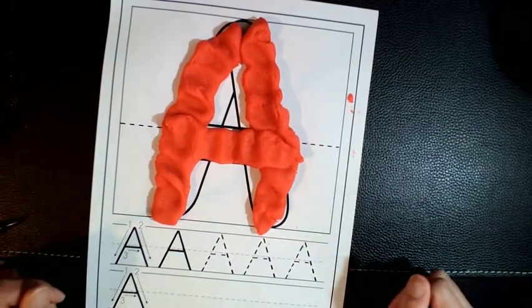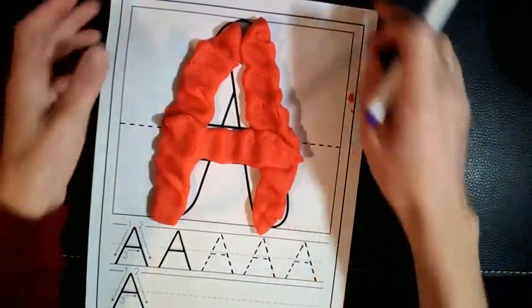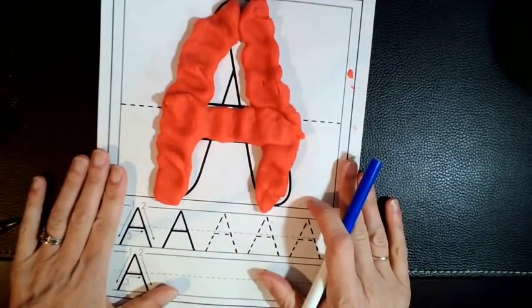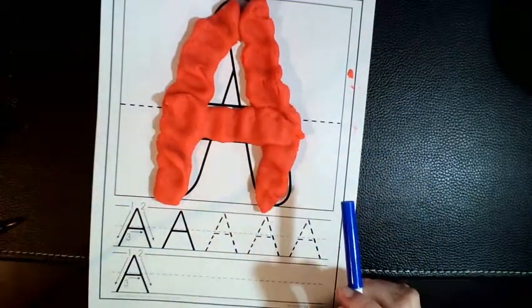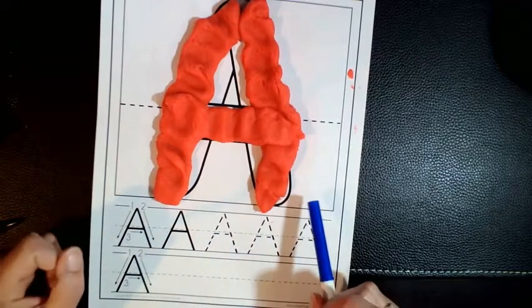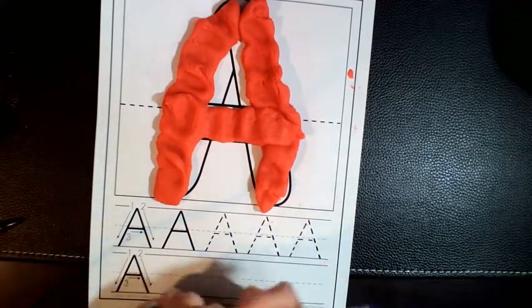Underneath of that is where we'll practice writing our A. So ideally you'll have a laminated piece of paper and you can have a dry erase marker. Again, if you don't have that, that's okay. You can just use a regular piece of paper.